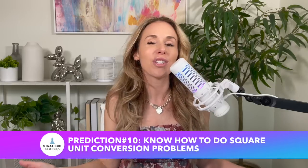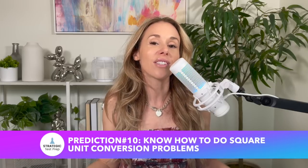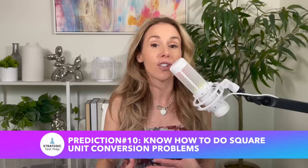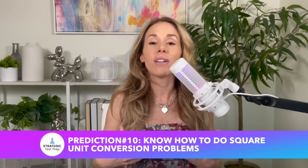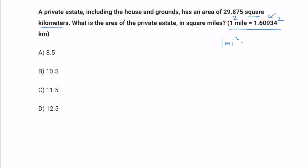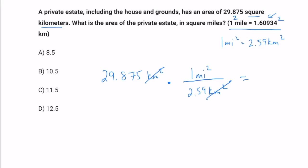Last but not least: conversion problems. Make sure you understand how to tackle a square unit conversion problem. You'll want to square whatever conversion units they give you to get them in square form, then multiply to get your final answer. They give you conversion units that are one-dimensional, and you really have to convert them to two-dimensional — or maybe even three-dimensional for a volume problem, where you'll have to cube both sides of the conversion first.